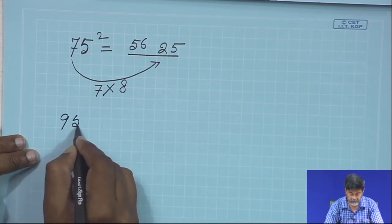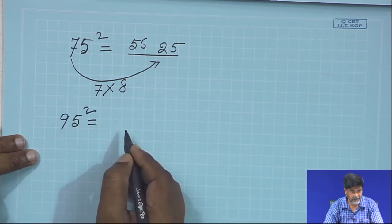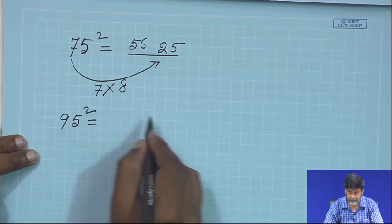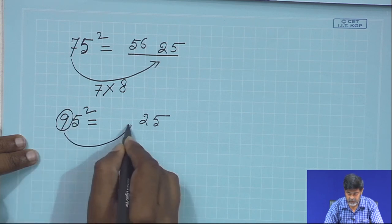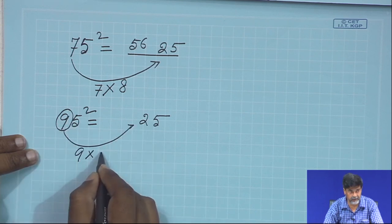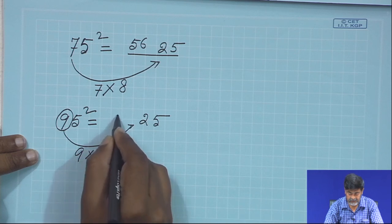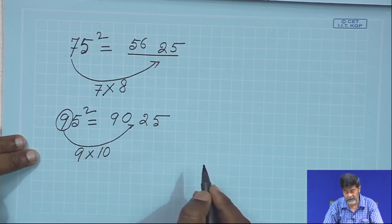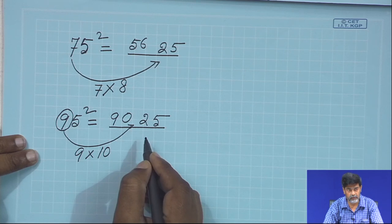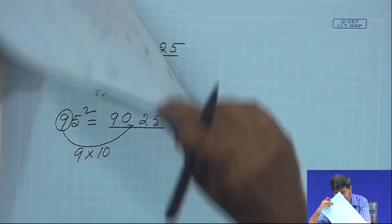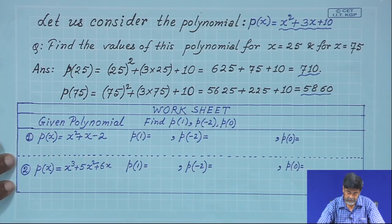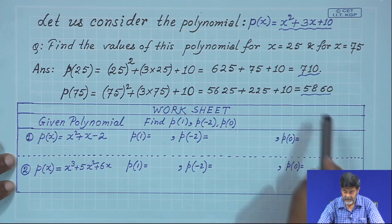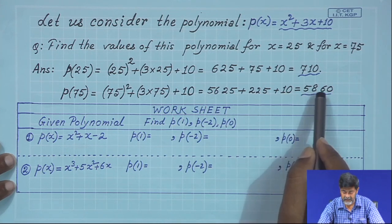For 95², 5² gives 25, and 9 multiplied by the next higher number 10 gives 90, so the result is 9025. The value of p(75) has been found to be 5860.